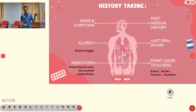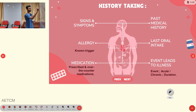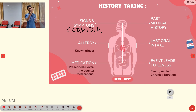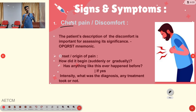For history taking, you collect a SAMPLE history: Signs and symptoms, Allergy, Medication, Past medical history, Last oral intake, and Events leading to illness (or injury in trauma). The most common signs and symptoms in cardiovascular emergencies include chest discomfort or chest pain, dyspnea, and palpitation. The first symptom we focus on is chest pain.